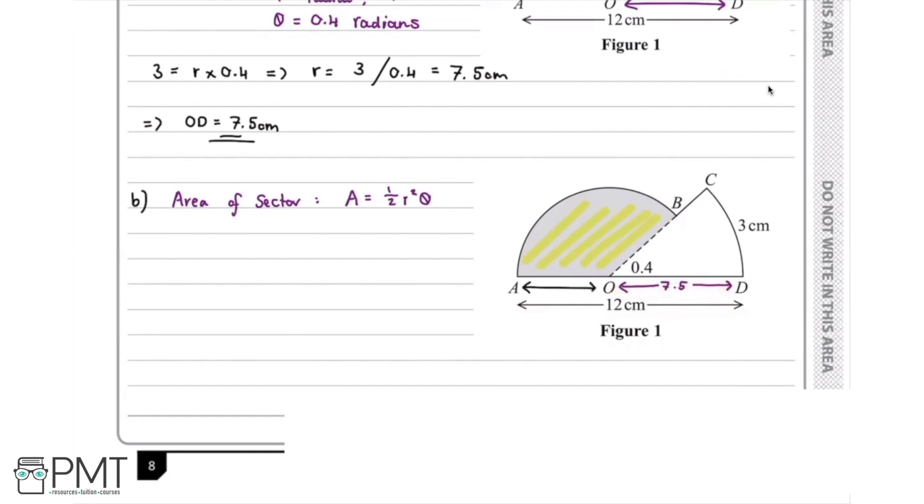By doing 12 minus 7.5, that is going to be equal to the radius of the circle where the sector shaded in gray comes from. Therefore, R is going to be equal to A to O, which equals 12 minus 7.5, which equals 4.5 centimeters.